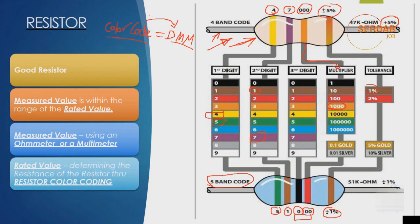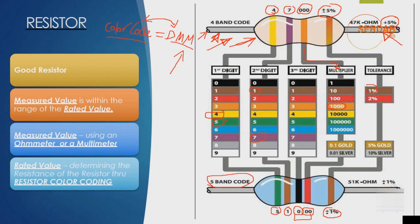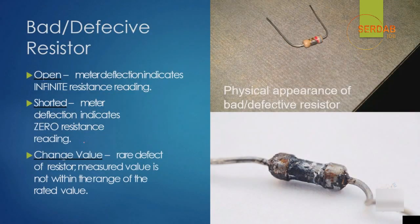If the measured value does not match the color-coded value, you have a problem. One important thing to know is that you cannot measure resistance using a digital multimeter while the resistor is still on the board. You have to desolder one of the two terminals so that you can measure it correctly. If you measure it while still on the board, you may end up measuring it in parallel or series with other components, causing a reading error.